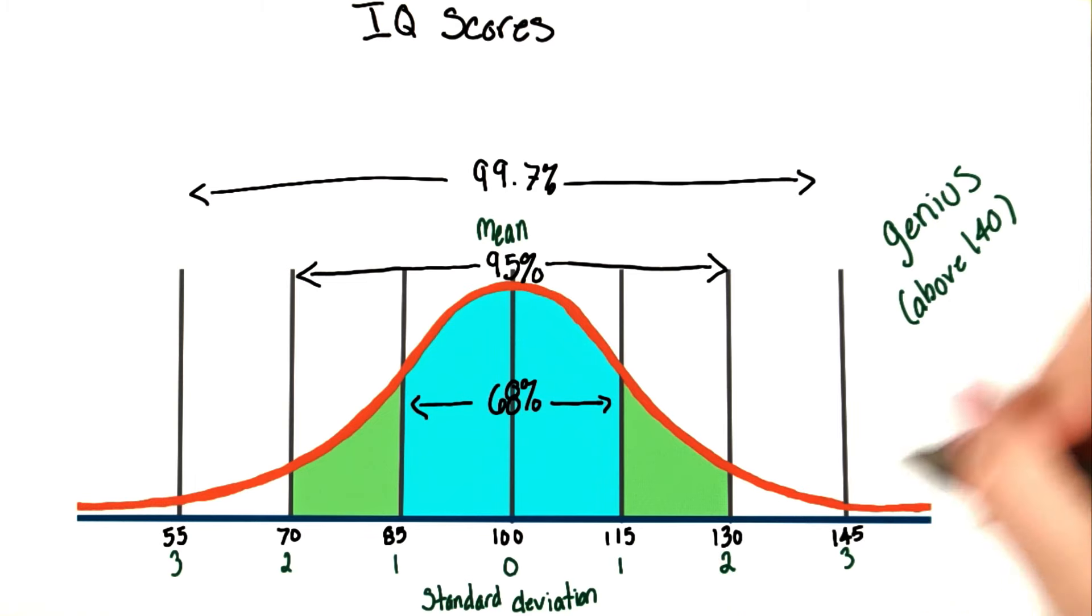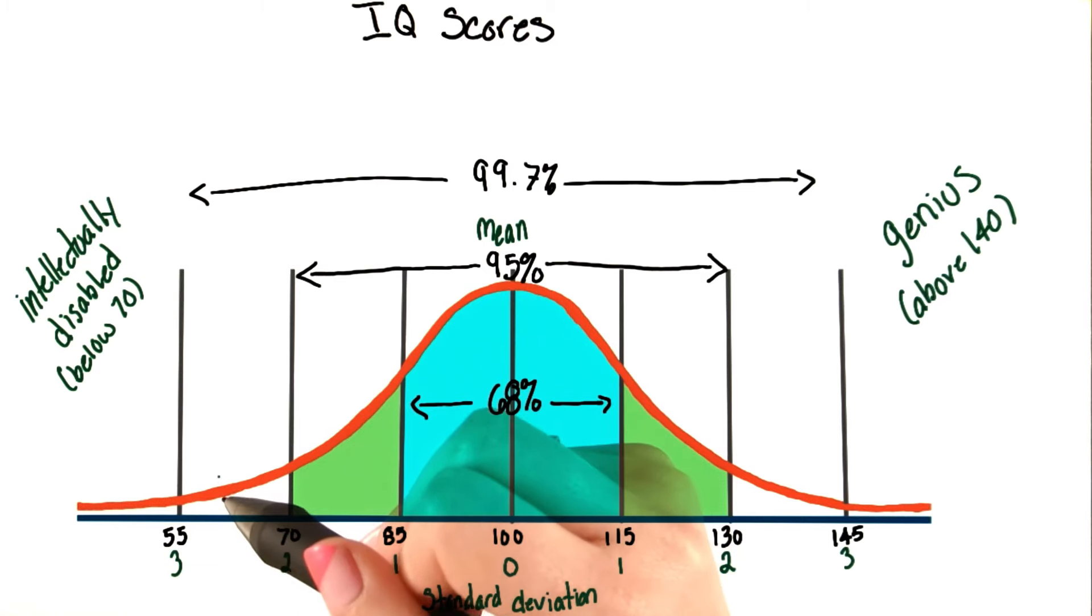Traditionally, those who have extreme IQ scores are given labels, such as genius for those who score above 140 on an IQ test, because not a lot of the population scores that high, or intellectually disabled for those who score less than 70 on an IQ test, because not a lot of the population scores that low.